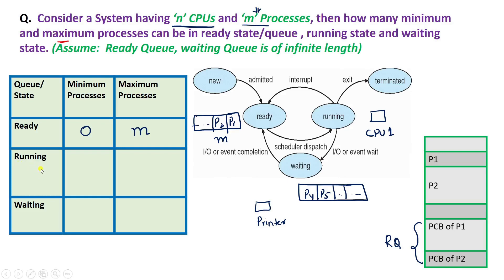Now let's come to the running state. The running state is associated with the CPU — whenever a process is executing on the CPU, we say that process is in the running state. Let's say we have n equal to 1, only one CPU. Then how many maximum processes can be executed on that particular CPU at a point of time? We will say only one — only one process can be present on that particular CPU, because with one CPU, only one process can execute on it.